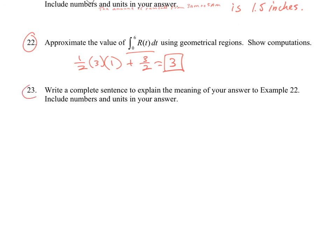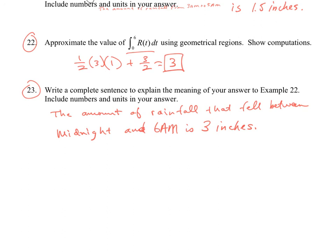23, now you can go ahead and try that one yourself. So the amount of rainfall that fell between midnight and 6 a.m. is three inches. I had a rainstorm that was coming up here, it was going to fall right during this thing, but it didn't happen. So we can pretend that you heard lightning and hard rain behind me, but you didn't.